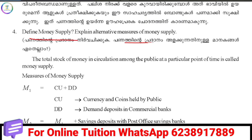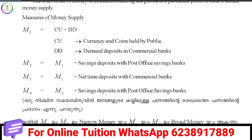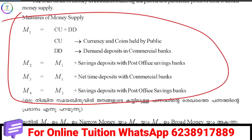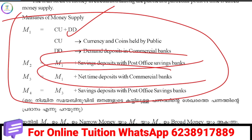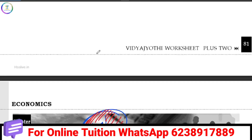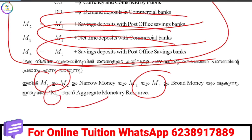What are the money supply measures? M1, M2, M3, M4 are the equations. M1 equals Currency (Cu) plus Deposits (D). M2 is M1 plus savings deposit with post office savings bank. M3 is M1 plus net time deposit with commercial bank. M4 is M3 plus savings deposit with post office savings banks. M1 and M2 are narrow money; M3 and M4 are broad money. M3 is a major money source.